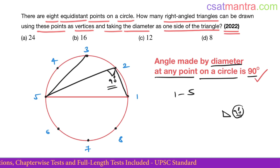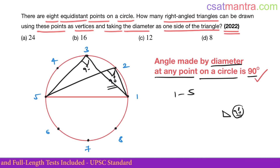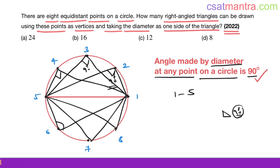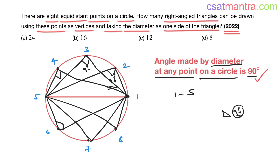The angle made by the diameter at point three is again 90 degrees — another right angle triangle. This gives us multiple right angle triangles. For one diameter, we get six right angle triangles. How many such diameters are possible? A second, third, and fourth — so four diameters total.